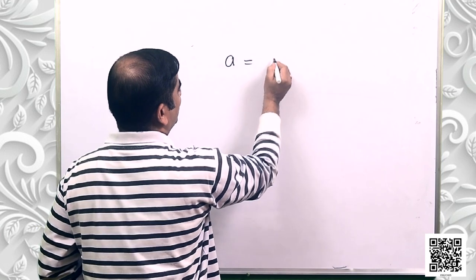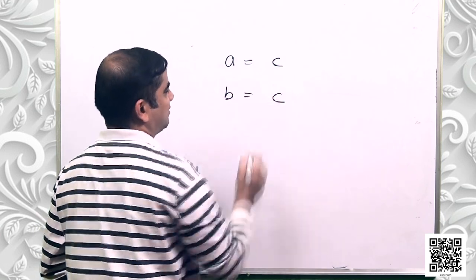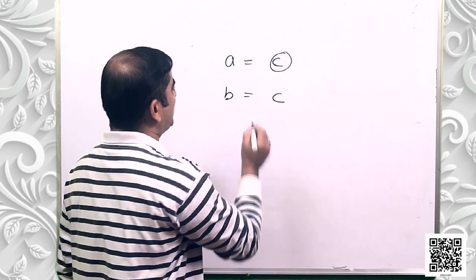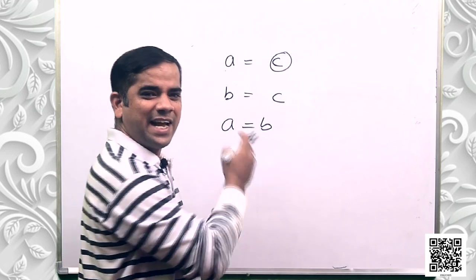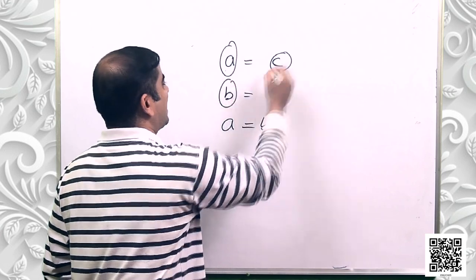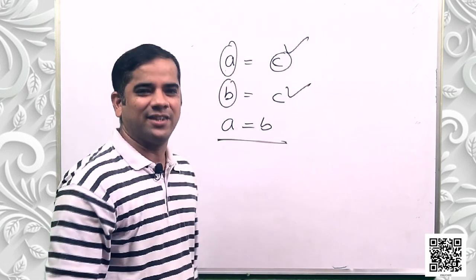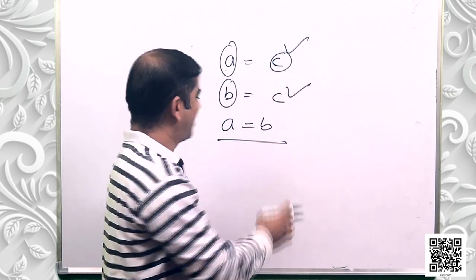Let us discuss some of Euclid's axioms. There are seven axioms in your book. The first axiom says that things which are equal to the same thing are equal to one another. For example, if A equals C and B equals C, then it clearly follows that A equals B.